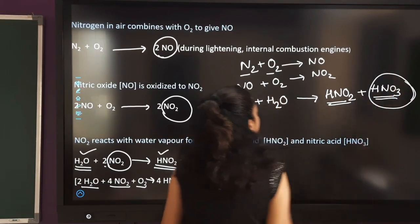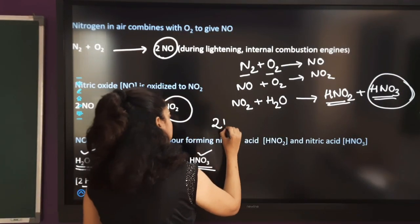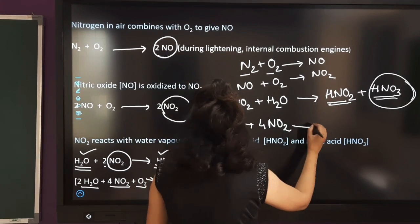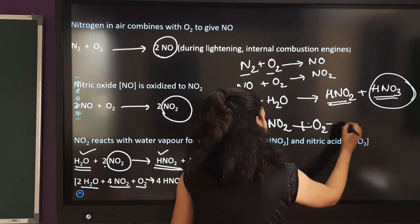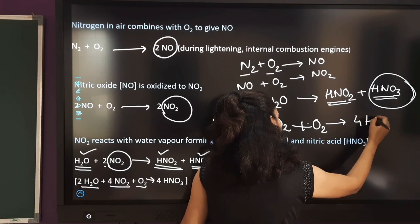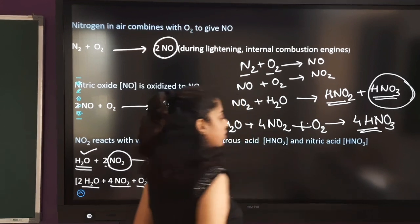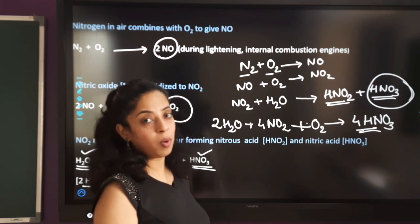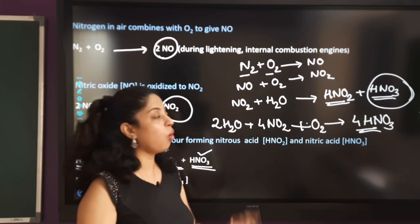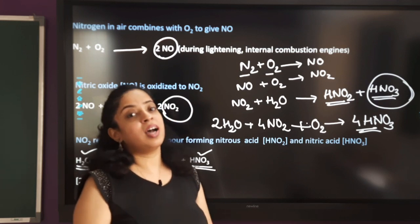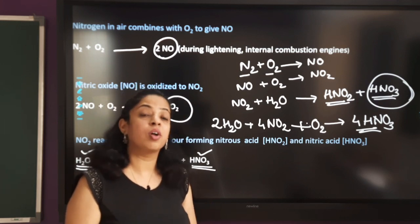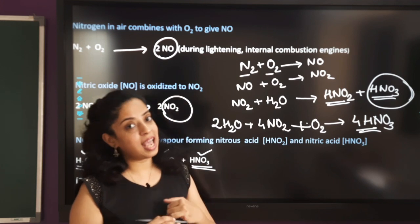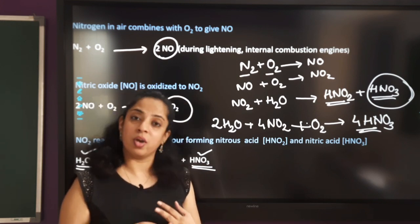Nitric acid is also formed by this reaction: 2H₂O + 4NO₂ + O₂ → 4HNO₃. If a question asks how nitric and nitrous acid are formed in the atmosphere causing acid rain, write all four reactions. If they ask for chemical reactions for the formation of acid rain, you must mention the formation of sulfurous acid, sulfuric acid, nitrous acid, and nitric acid — all four reactions.